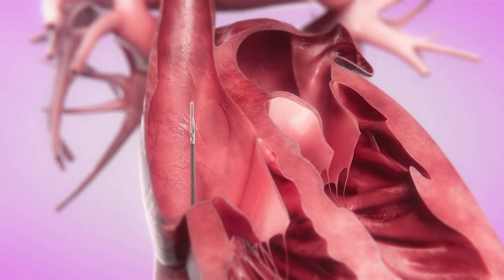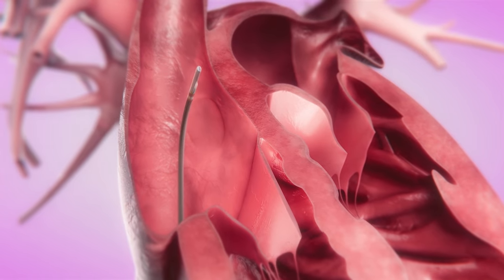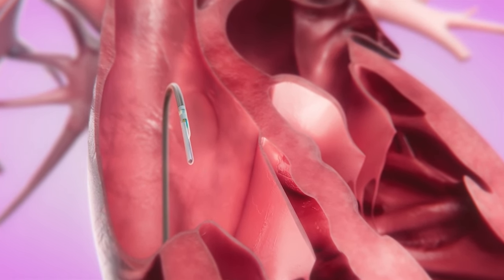With a frequency range of 4 to 10 MHz, Verisight Pro is able to clearly image structures in both the near and far field.